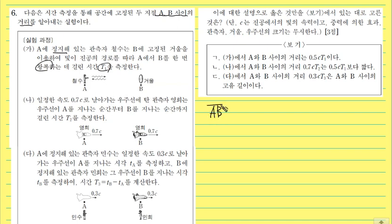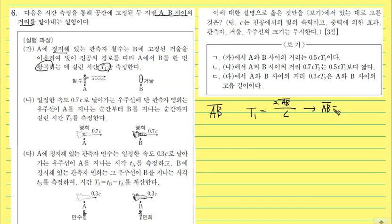여기서 AB 거리는 정상이에요. 거리가 움직이지 않고 있잖아요. 철수가 봤을 때 정상인데, T1이라는 건 왕복했기 때문에 정상 거리 AB를 빛의 속도 C로 운동하는 걸 측정한 거예요. 그래서 AB의 길이는 0.5C × T1이 됩니다.